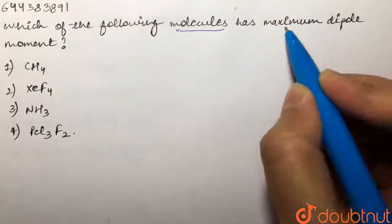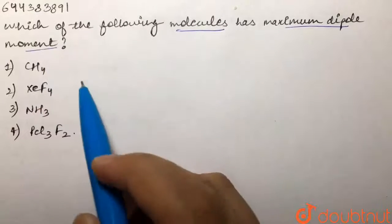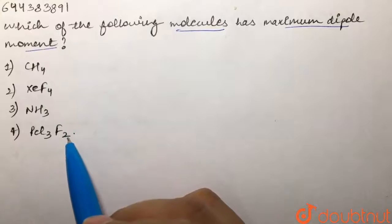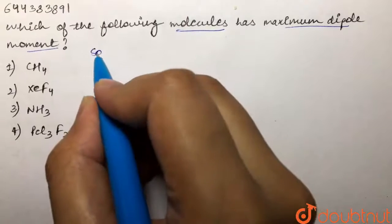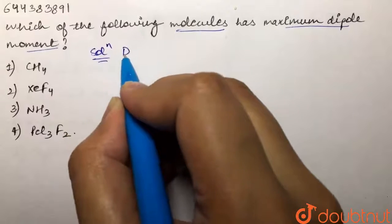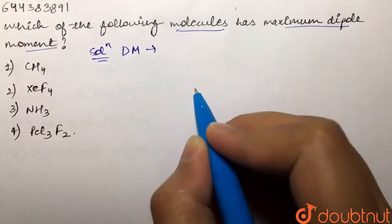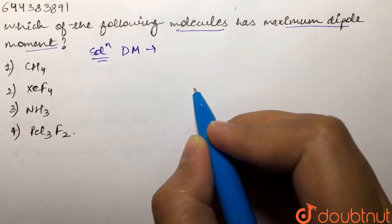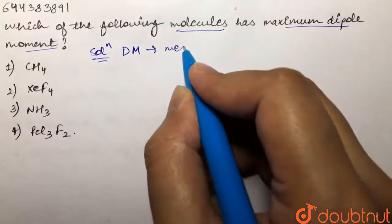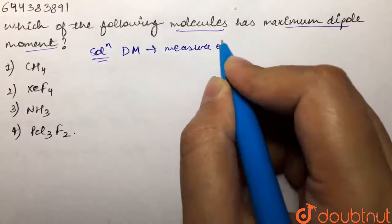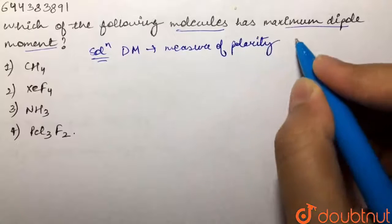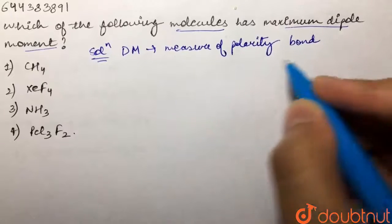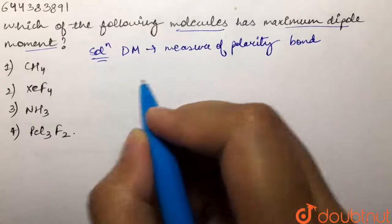Our question is: which of the following molecules has the maximum dipole moment? We are given methane, XeF4, ammonia, and PCl3F2. We need to determine which has the maximum dipole moment. Dipole moment is the measure of the polarity of a chemical bond between two atoms in a molecule.